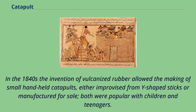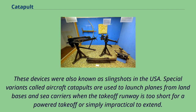In the 1840s the invention of vulcanized rubber allowed the making of small handheld catapults, either improvised from Y-shaped sticks or manufactured for sale. Both were popular with children and teenagers. These devices were also known as slingshots in the USA.